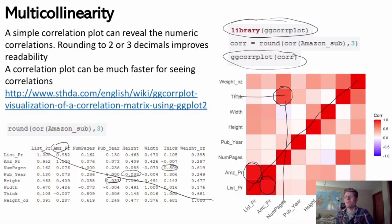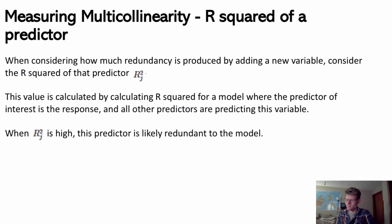You can also customize the ggcorrplot — customize color options and change the symbols. I really like the circle one. If you go to the link shown here, you can see a whole lot of cool customization options for that plot.